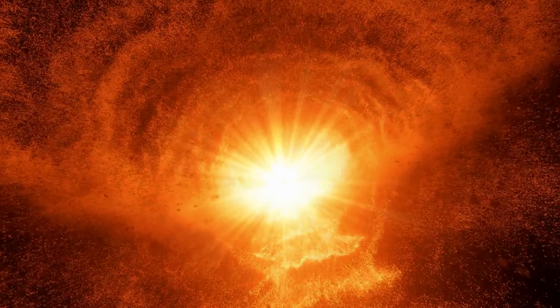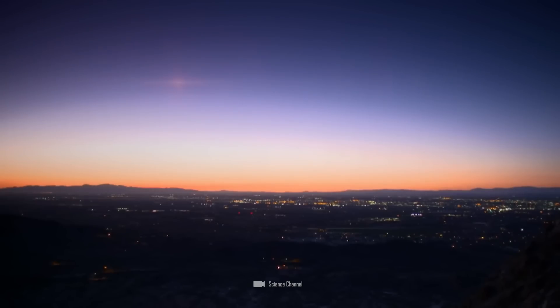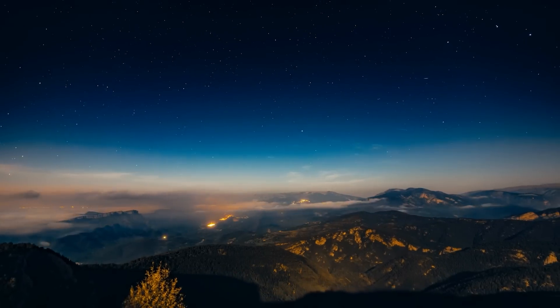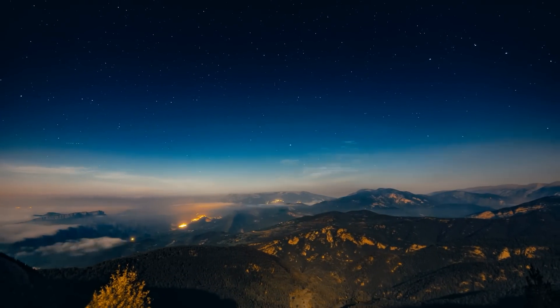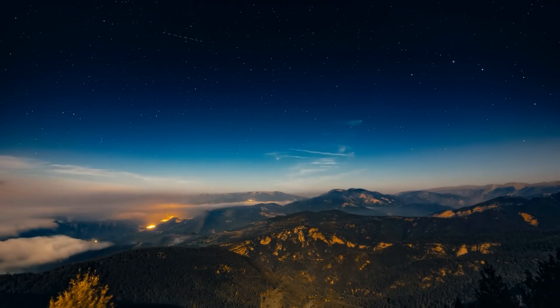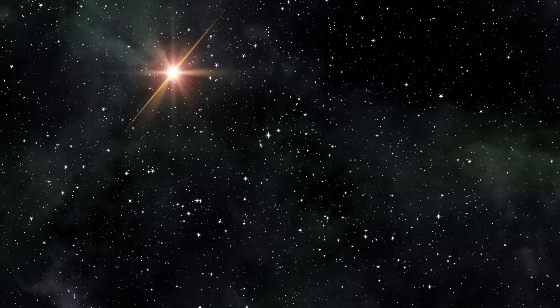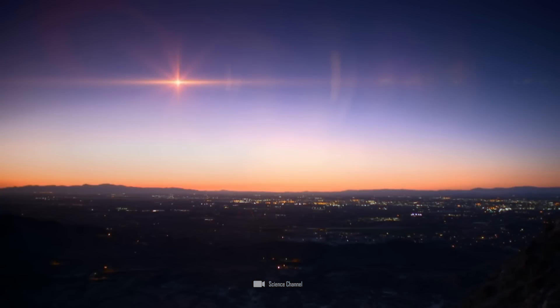When Betelgeuse goes supernova, the event will shine so brightly that we will be able to see it in broad daylight. For a few moments, it will be like a bright flash. Then the remnants of the explosion will continue to shine so brightly for several weeks to months that Betelgeuse will become one of the brightest objects in the night sky. The supernova will probably shine as brightly as the full moon for weeks.